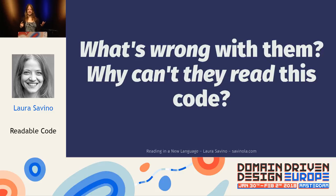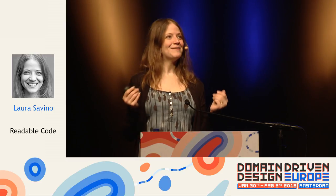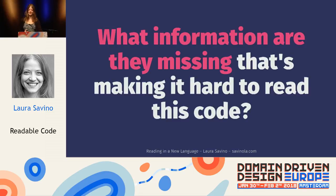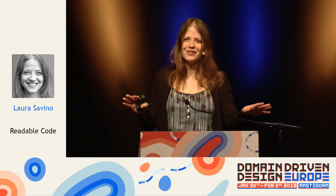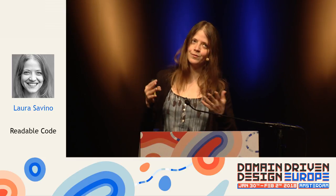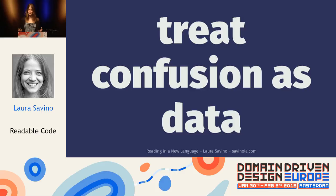Sometimes when somebody says our code is unclear, we want to respond rhetorically — what's wrong with them? We think they're just not trying hard enough, or not smart enough. Often I'll catch myself thinking this about myself. The more data-seeking way to phrase these questions is: what information are they missing that's making it hard to read this code? This works on both your teammates and yourself. Thinking about your teammates' backgrounds will help you write code that takes advantage of their particular experiences. When you yourself are confused reading some code, this question helps you focus on what you need instead of how painful it is. You write readable code partly by treating your own and your teammates' confusion as data.